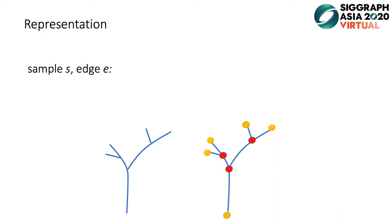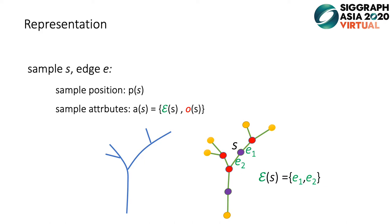Given a set of paths, we sample the intersections and ends of paths, and we place samples along paths with uniform spacing. Edges are used to connect samples along paths. For each sample, we record its global positions and attributes, which include edges and local path orientations. For example, the annotated sample has two edges, E1 and E2, and two orientations, O1 and O2.